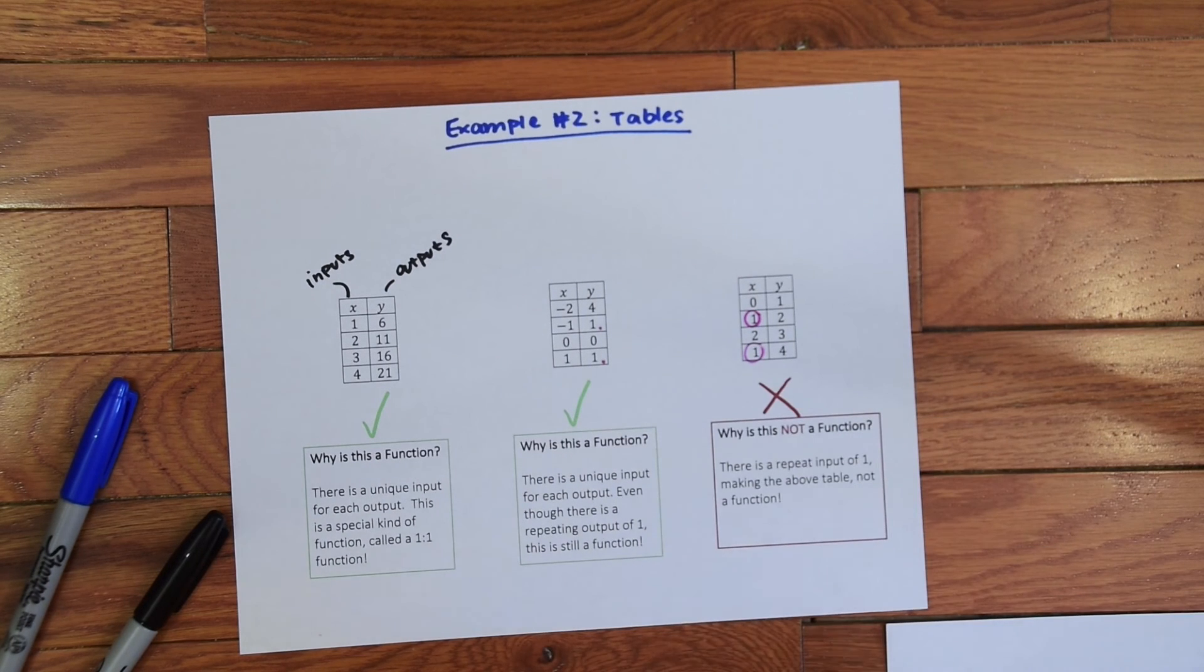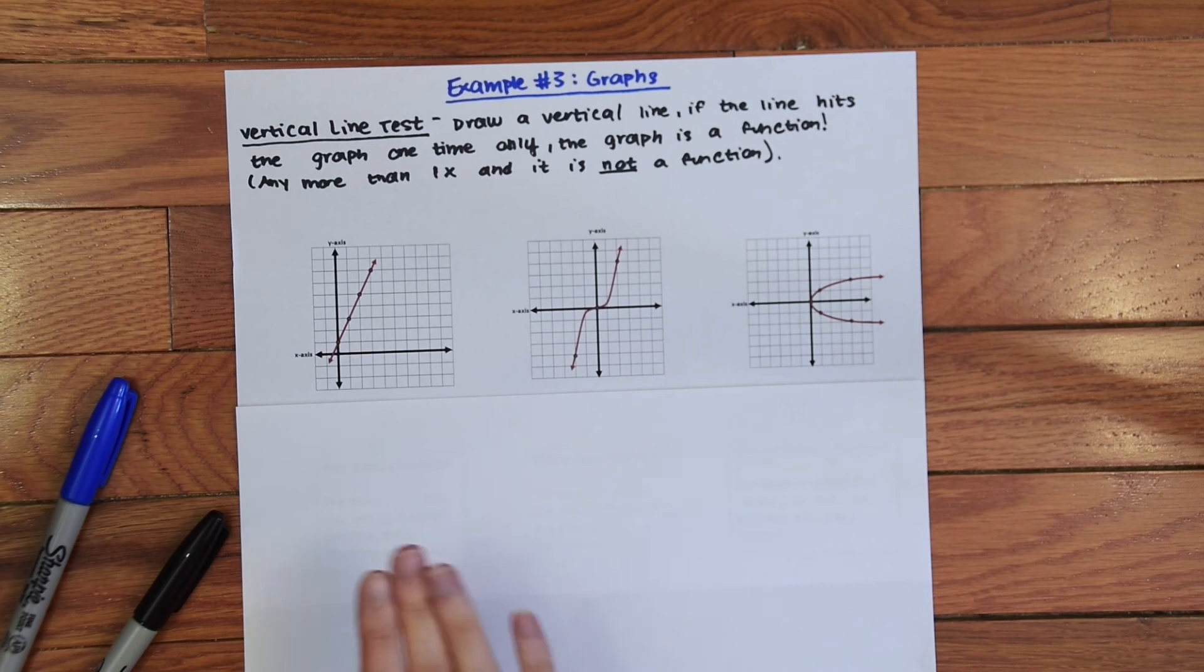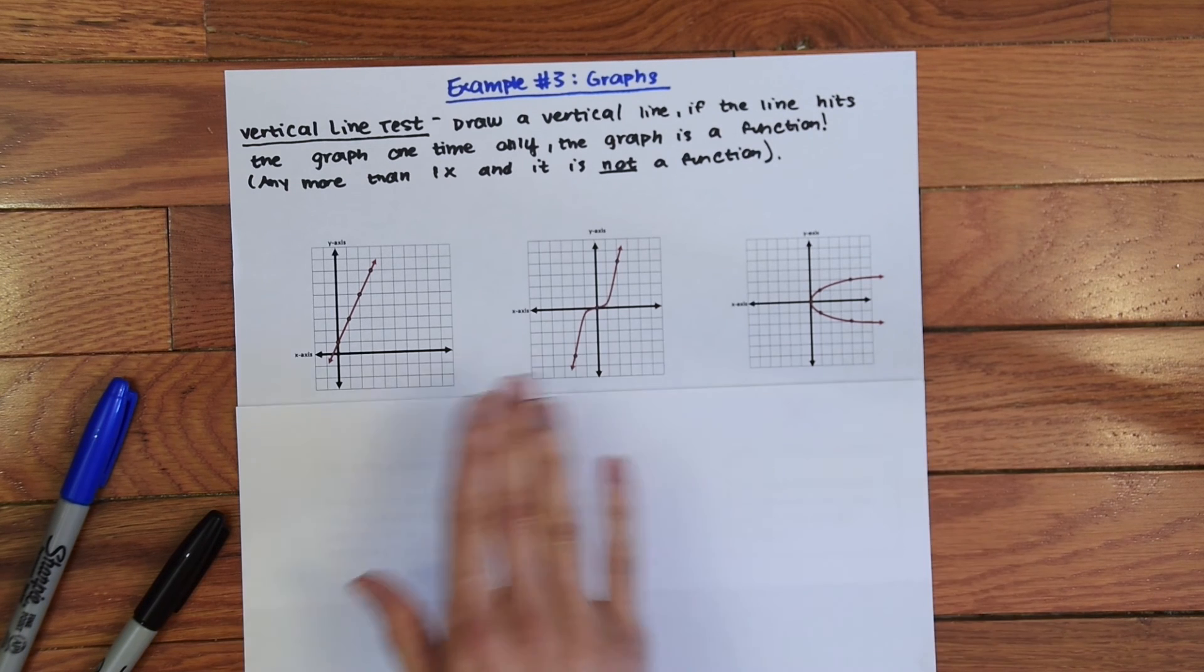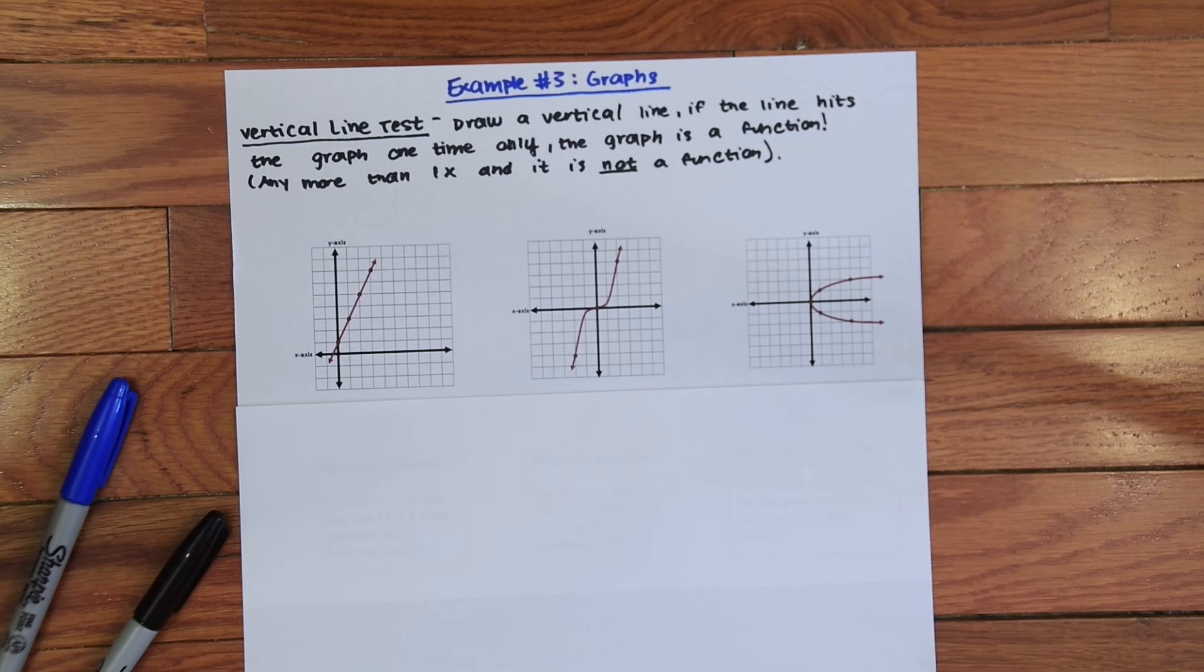So example number three, we have all these graphs and we need to know if they are functions or not. So in order to know if a function is a function when looking at a graph we perform something called a vertical line test. So all we must do is draw a vertical line and if the line hits the graph one time then the graph is a function, but if the line hits the graph any more than that then it is not a function. So the reason this works is because if there's more than one input the vertical line would hit the graph more than one time.